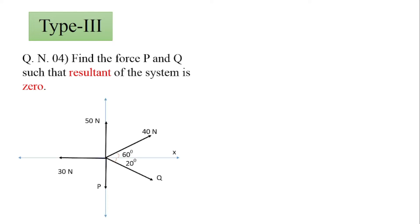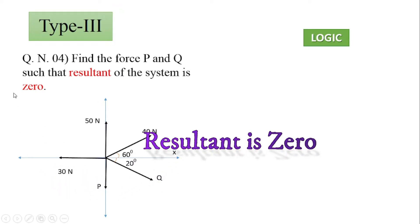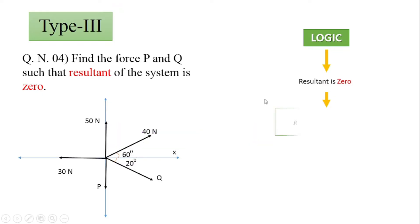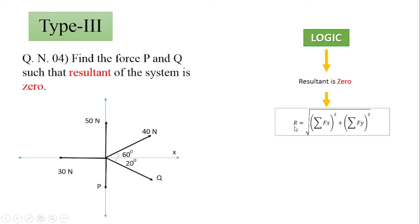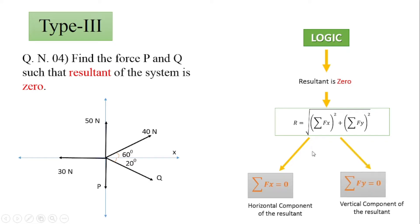This question was asked in the Mumbai university question paper in 2013 for 5 marks. Now we'll see the step-by-step way to find the resultant. The logic for this question: since the resultant is given as zero, using the equation R = √(ΣFx² + ΣFy²), if R equals zero, then squaring both sides gives 0 = ΣFx² + ΣFy². This condition is satisfied only when ΣFx = 0 and ΣFy = 0.